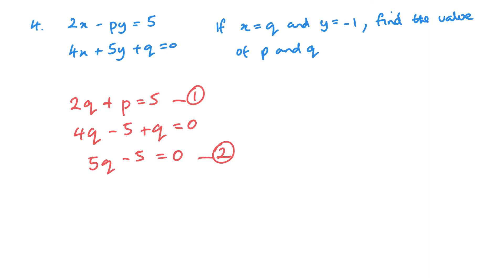Now from this second equation, it contains no values of p, so it means I can actually find out the value of q. So let's carry this on. And q is going to be equal to 1. And then sub q equals 1 into equation 1, and we get 2 lots of 1 plus p equals 5. So p is going to be equal to 3. And that's it, really straightforward.